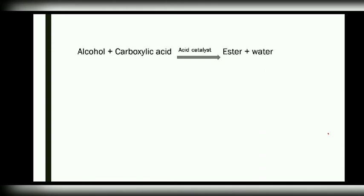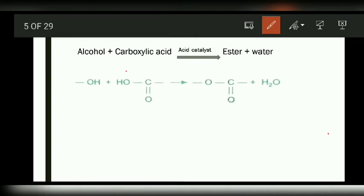When an alcohol reacts with a carboxylic acid in the presence of an acid catalyst, an ester will be formed with the elimination of water. Here, this is the alcohol functional group and this is the carboxylic acid functional group. These two undergo condensation reaction with the elimination of water, and this is the ester functional group.